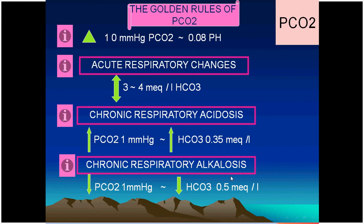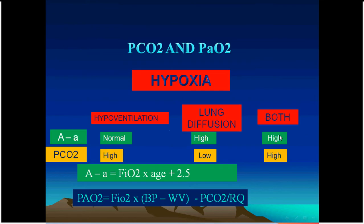Similarly, in chronic respiratory alkalosis, when there is adequate time to reach steady state, loss of 1 mmHg of CO₂ is associated with a loss of 0.5 mEq/L of bicarbonate. This should be understood clearly.